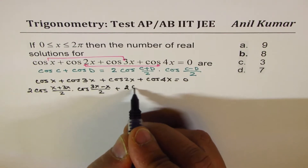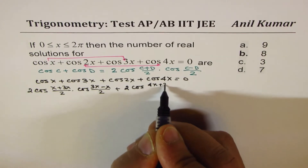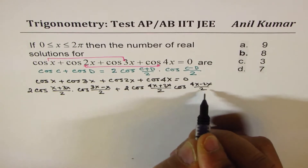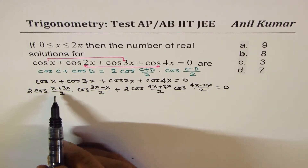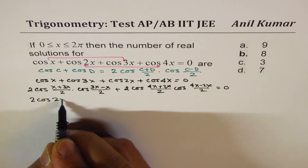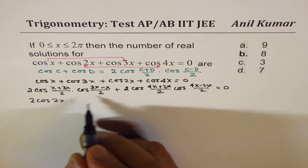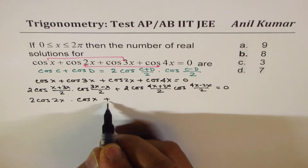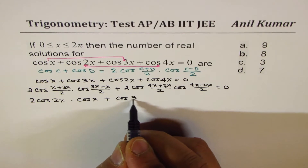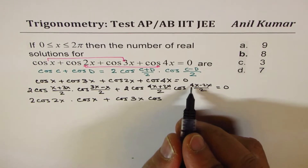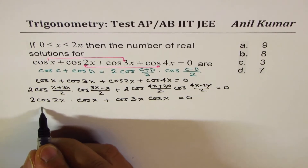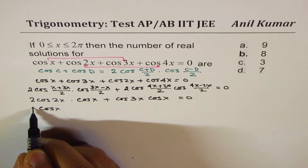Now applying the identity to cos 2x + cos 4x: we get 2·cos((4x + 2x)/2)·cos((4x − 2x)/2), which gives 2·cos(3x)·cos(x). So we can take 2·cos x common from both groups, and we are left with 2·cos x·(cos 2x + cos 3x) = 0.